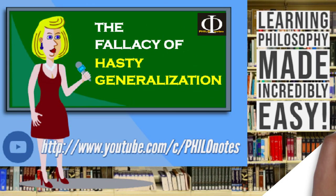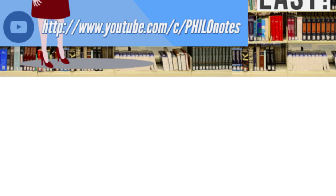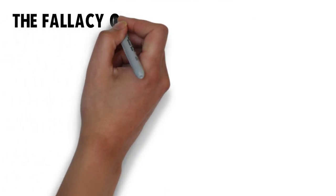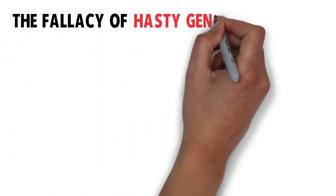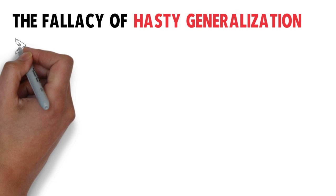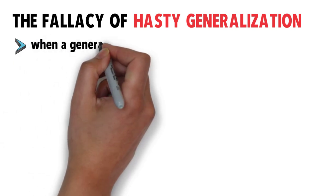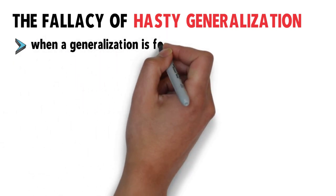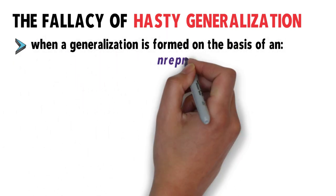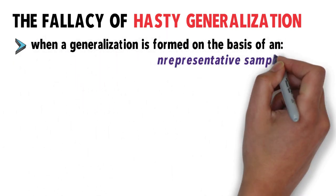The fallacy of hasty generalization occurs when a generalization is formed on the basis of an unrepresentative sample.